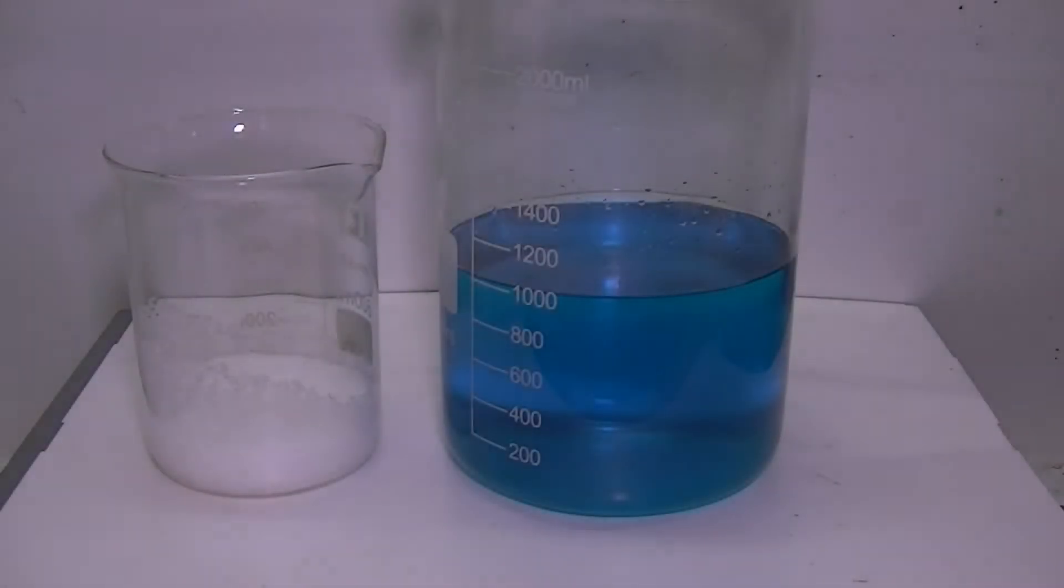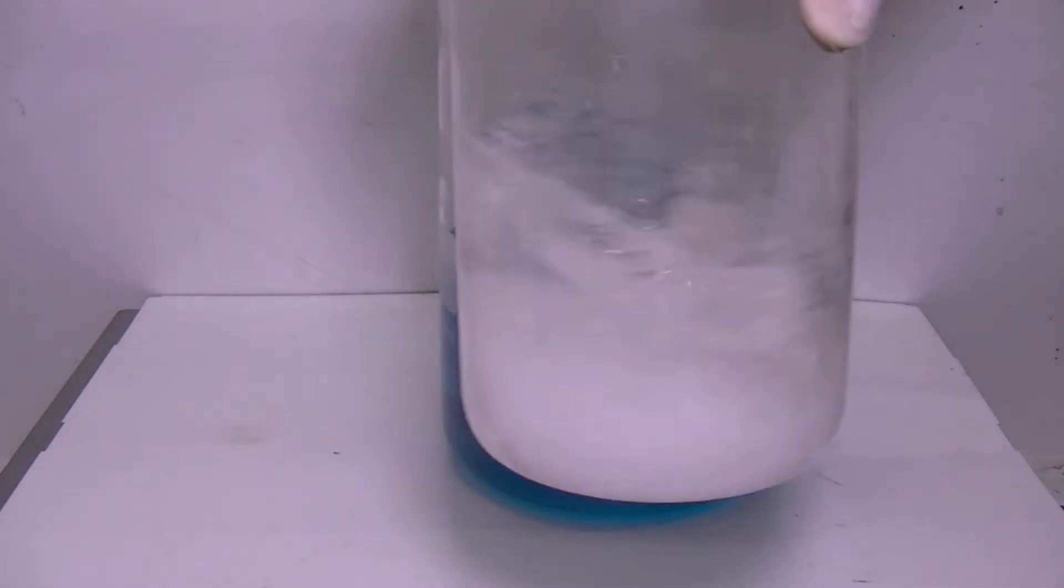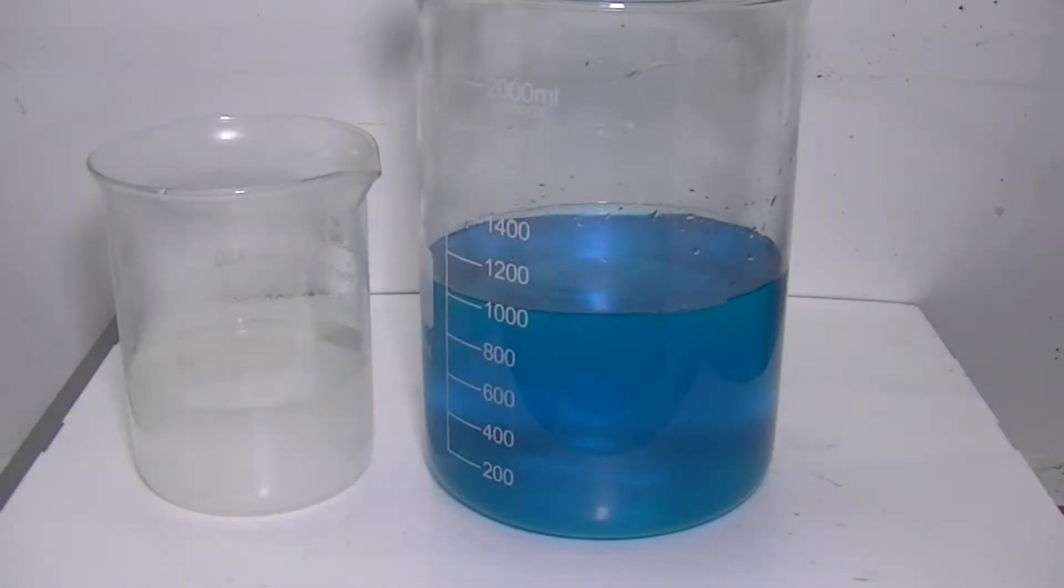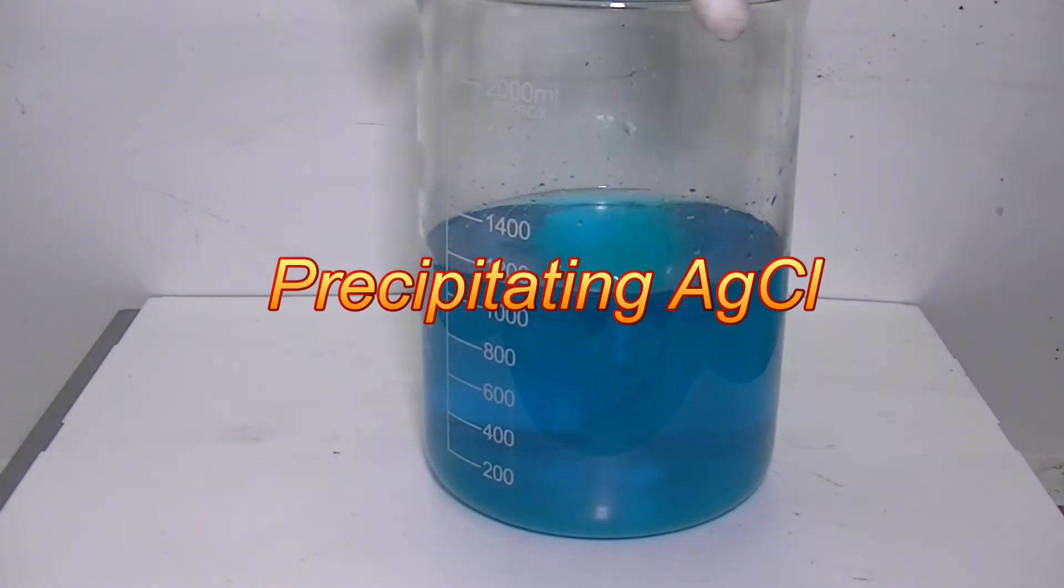Now that the silver nitrate solution is clear of any solids, it is placed on a magnetic stirrer and I'll begin adding a saturated solution of the calculated amount of sodium chloride. Silver chloride looks like cottage cheese and will precipitate immediately.